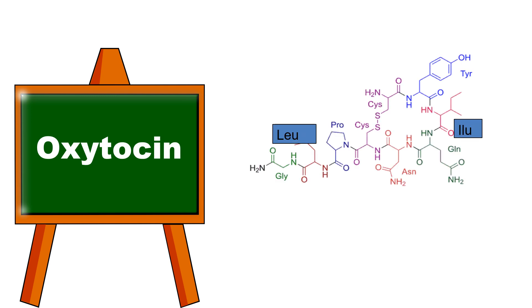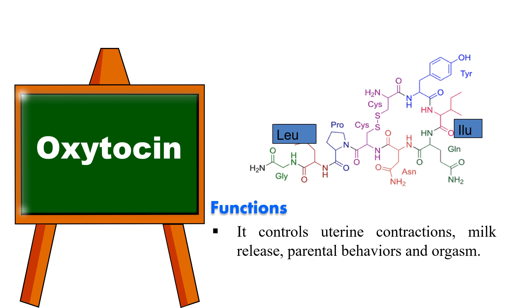Next is oxytocin. Oxytocin is derived by enzyme splitting from a peptide precursor and is coded by the human OXT gene. The structure of this nonapeptide includes: cysteine, tyrosine, isoleucine, glutamine, asparagine, cysteine, proline, leucine, and glutamine amino acids. Its function is to control uterine contractions, milk release, parental behavior, and orgasm.